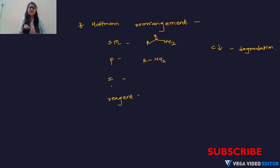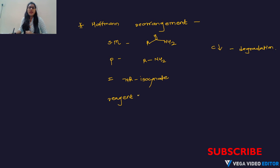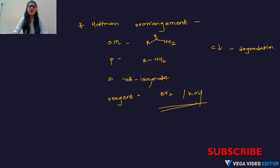The intermediate for Hofmann rearrangement is alkyl isocyanate. The reagent used is Br₂ in the presence of KOH. Now we can see the mechanism for Hofmann rearrangement.